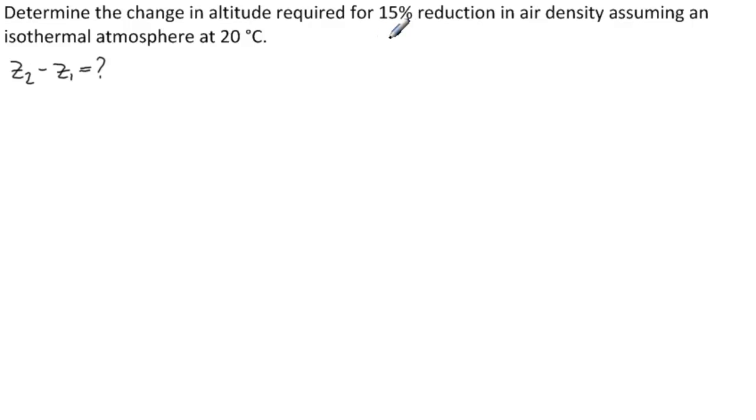We want a 15% reduction in air density. So that means rho 2 has to equal 85% of the original. So 0.85 times rho 1. And we have air as our gas. And we have T1 equals T2 equals 20 degrees Celsius. So this is our information.